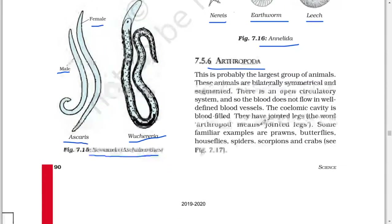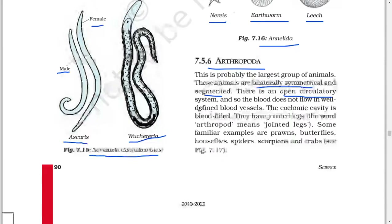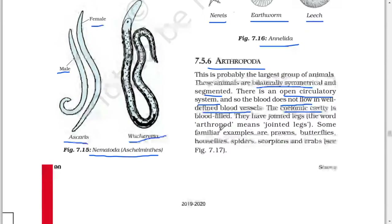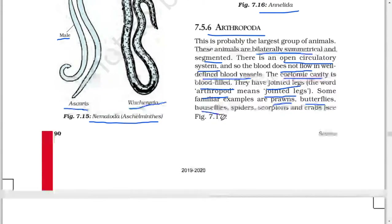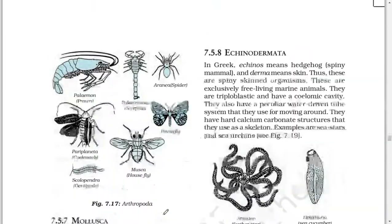Next: Arthropoda. This is probably the largest group of animals. These animals are bilaterally symmetrical and segmented. There is an open circulatory system, and so the blood does not flow in well-defined blood vessels — the coelomic cavity is blood-filled. They have jointed legs; the word 'arthropod' means jointed legs. Some familiar examples are prawn, butterflies, house flies, spiders, scorpions, and crabs.